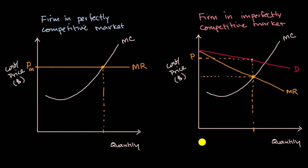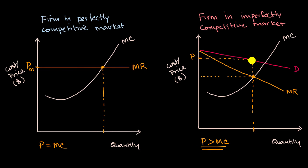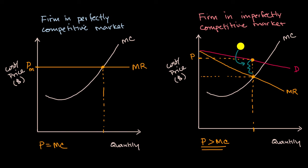We see a situation where price is greater than marginal cost, versus in a perfectly competitive market where price is equal to marginal cost at the optimal quantity. But because of this gap — people are willing to pay more than the marginal cost, yet you still aren't going to produce more because it doesn't make sense from a marginal revenue point of view — economists would refer to this gap between price and marginal cost as an inefficiency.